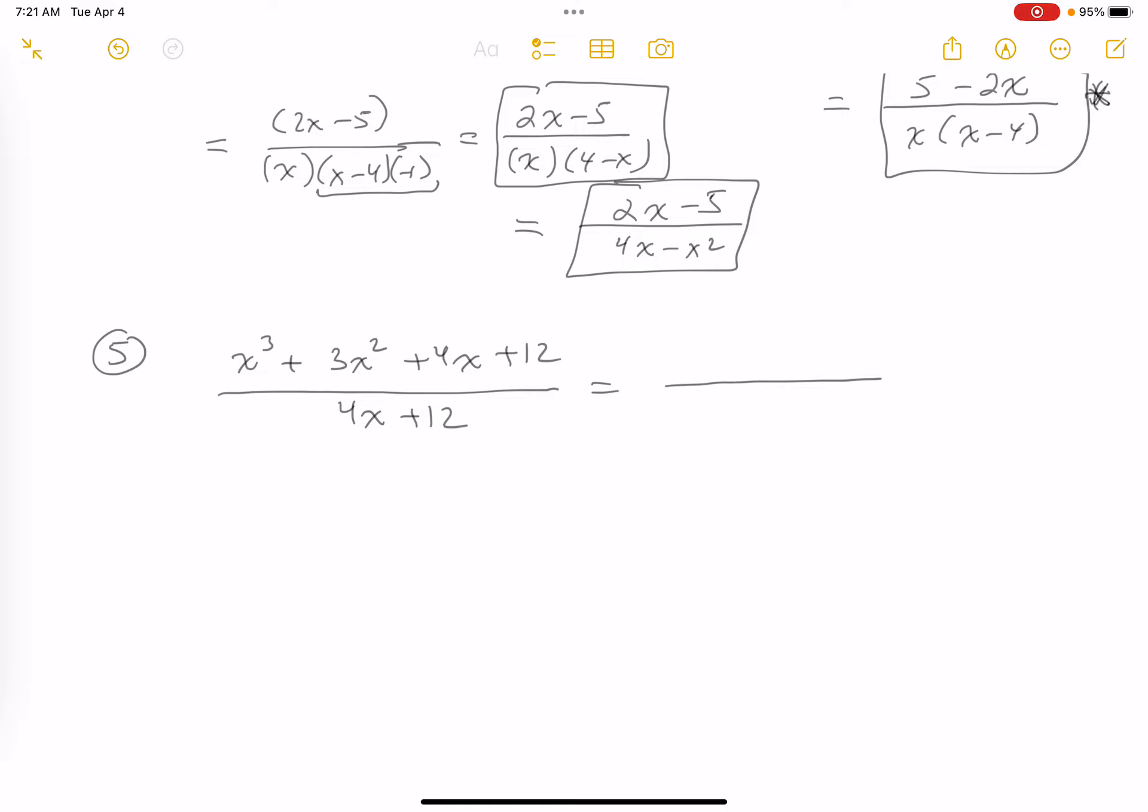All right, the first thing I would do is I would factor the bottom. I notice the bottom factors because the GCF pulls out, 4 times x plus 3.